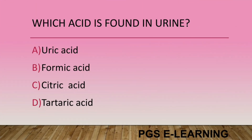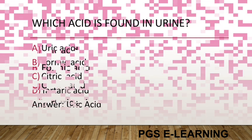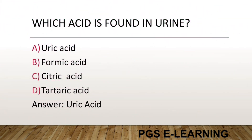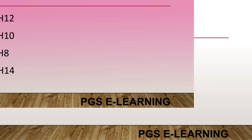Which acid is found in urine? Option A, uric acid. Option B, formic acid. Option C, citric acid. Option D, lactic acid. Correct answer is uric acid.